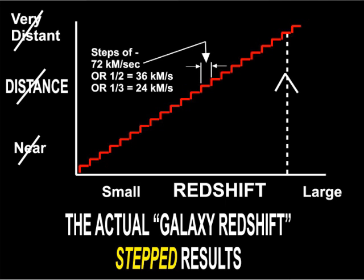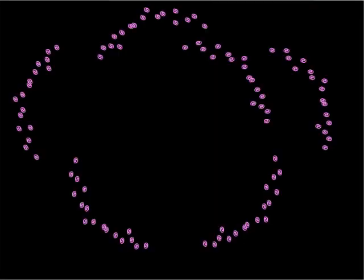The creationist Barry Setterfield has shown that these steps are due to the atomic properties of the atom as the speed of light was decreasing over time. As the Big Bang expanded, the disposition of matter should be extremely uniform, but it is not.